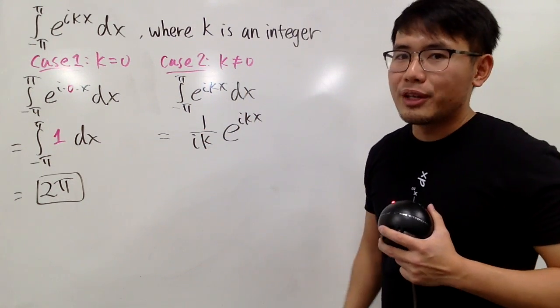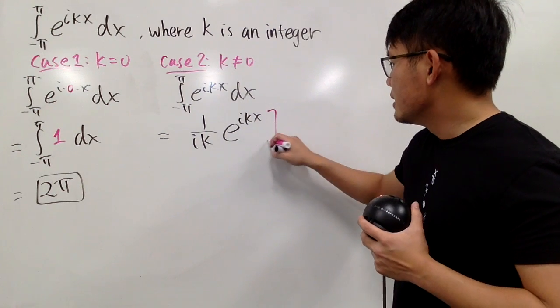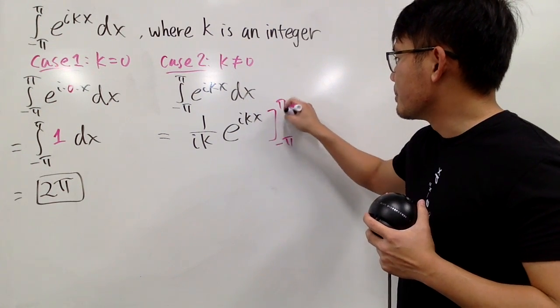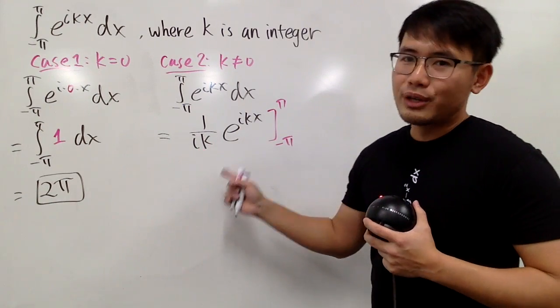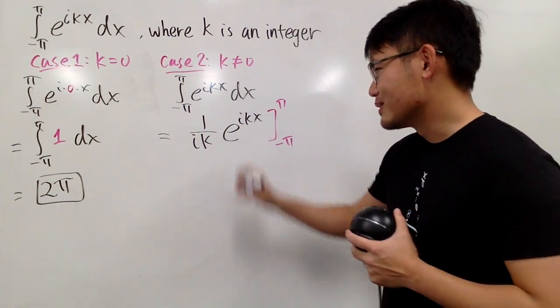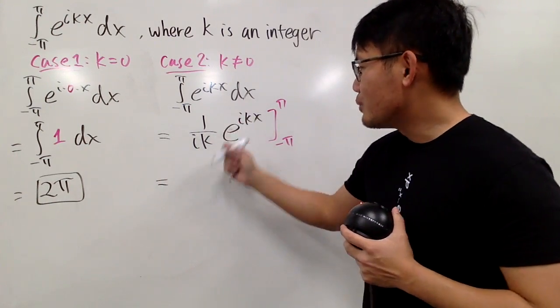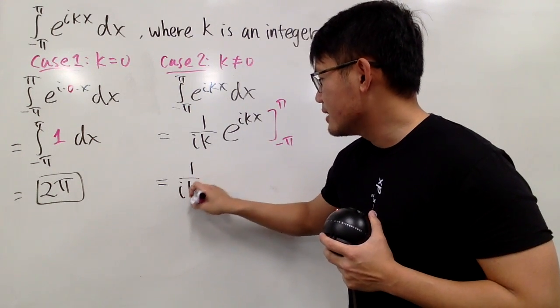So you have 1 over ik right here. And then you can put in the numbers. We have the negative pi and then the positive pi right here. Notice, even though here I have the i on the bottom, but it's okay, I like to be on the bottom this time. So I'll just keep it as how it is.